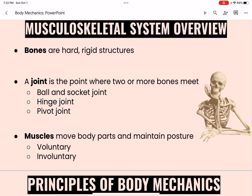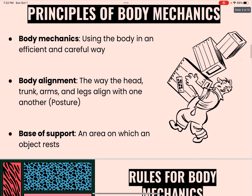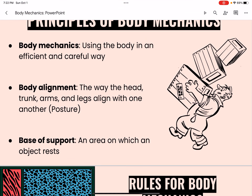Muscles move body parts and maintain posture. Voluntary muscles are consciously controlled — for instance, the arm and leg muscles. Involuntary muscles work automatically, such as cardiac muscle. Body mechanics refers to using the body in an efficient and careful way.